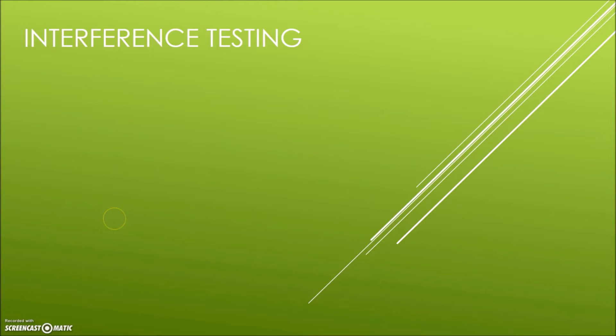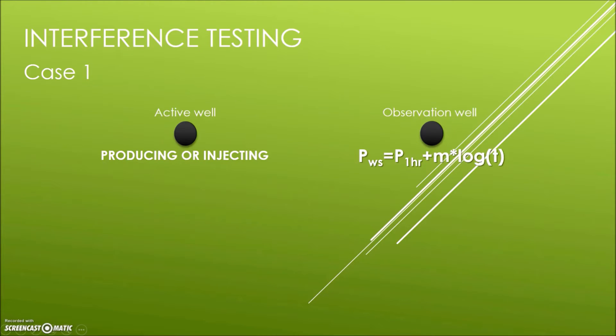Thank you very much Xi Cheng for the explanation. For my part, I will explain to you one of the cases the interference testing can be done. Case 1, where the active well is producing or injecting. The pressure at the observation well can be calculated using this formula: PWS equal to P1HR plus M log T, where PWS is the stabilized well pressure equal to pressure at 1 hour plus M is the gradient log time.